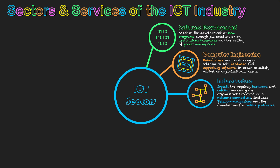Next we have infrastructure, which covers job roles that install the required hardware and cabling necessary for organizations to establish a network connection. These days, if you're not connected to the internet you're pretty much isolated from the world. For businesses, the network needs to be more tightly constructed with more secure lines so the business can operate without falling offline. This includes installation of cabling, routers, and related equipment for both internal networks and wider internet connectivity.